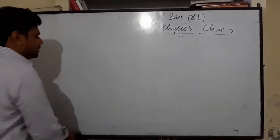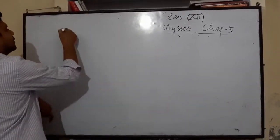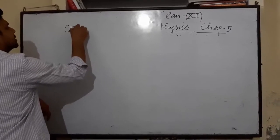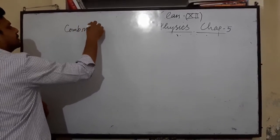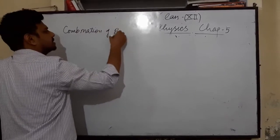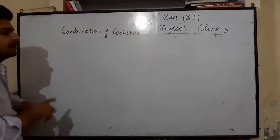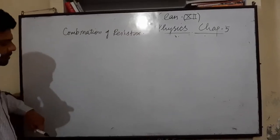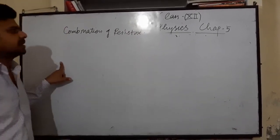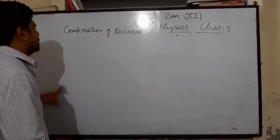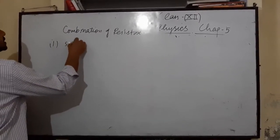Now today we will do the combination of resistors, just as we have done for capacitors. There are two types of combinations: one is series combination and the other is parallel combination.